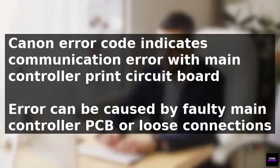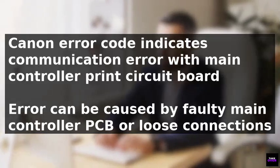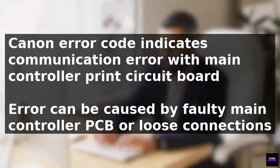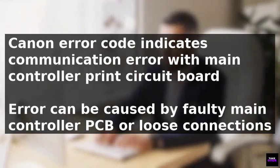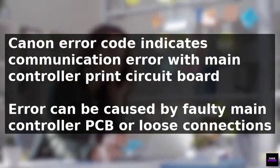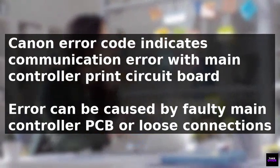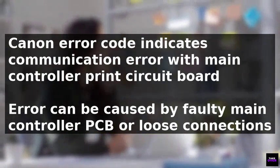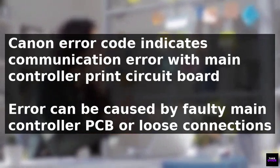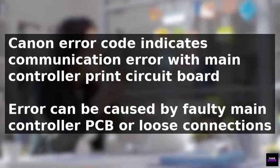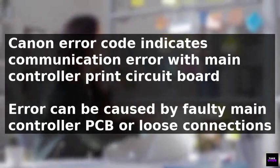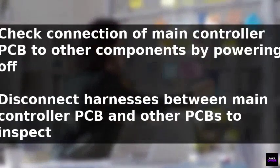The Canon Error Code E0007320023 indicates a communication error with the main controller print circuit board, or PCB. During startup, this error can be caused by a faulty main controller PCB. Loose connections to the main controller PCB are other common issues.